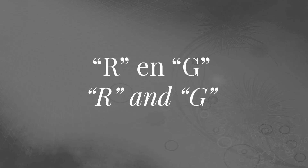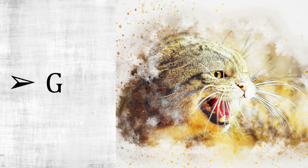R and G. The sounds R and G. Some of you said that you have difficulty pronouncing the letter R, so let's look at the letters R and G, because they can both be quite tricky to pronounce. For the G sound, you can try to replicate a cat that is angry — you know, when they hiss.